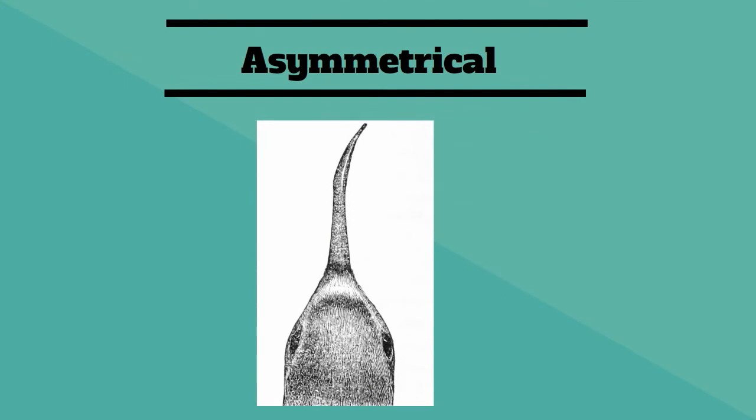And finally, this bird, the wrybill, is the only species in the world that has a beak that is bent sideways. Therefore it prevents it from having a mirror image.